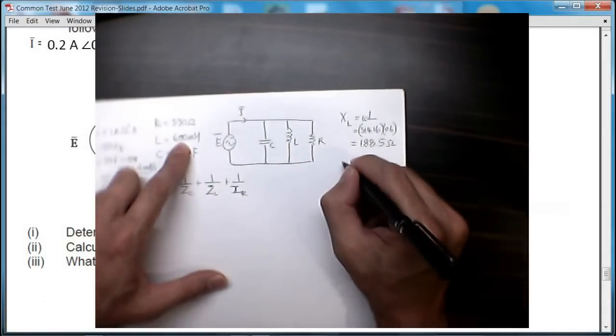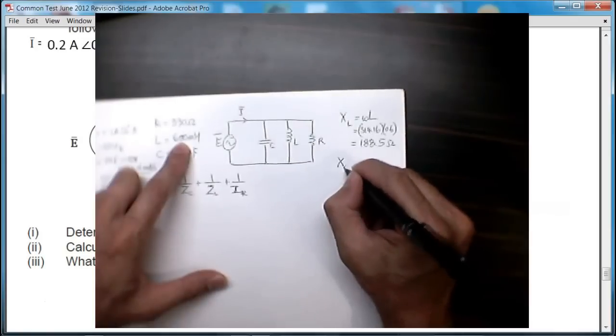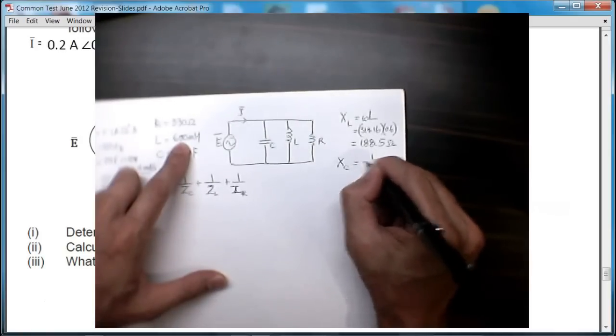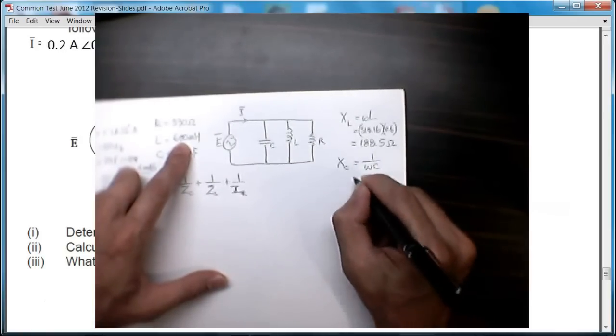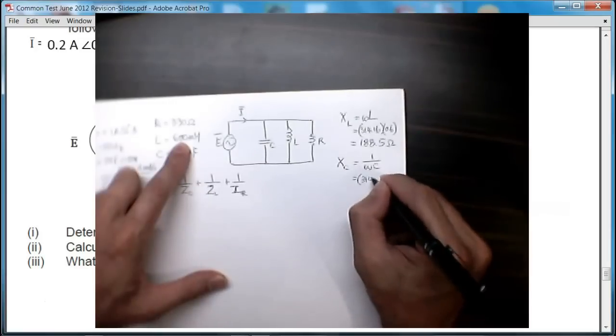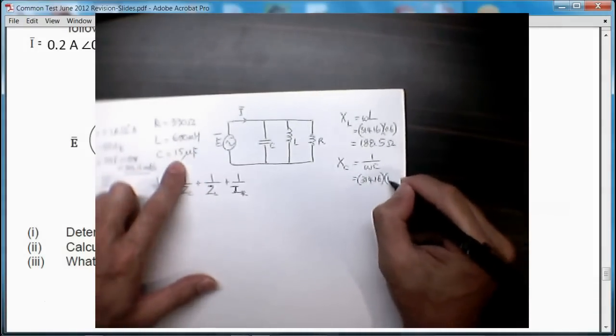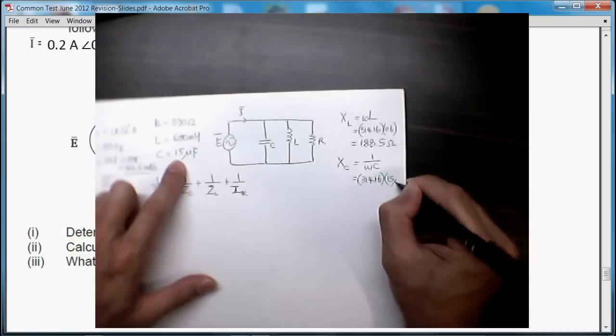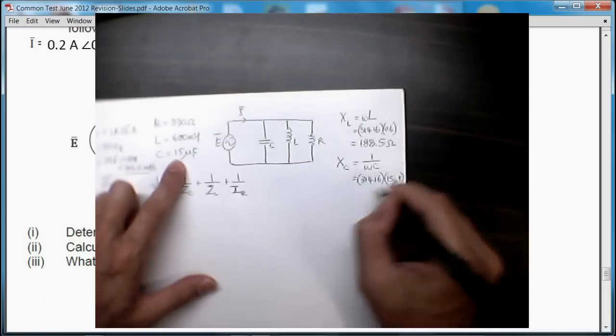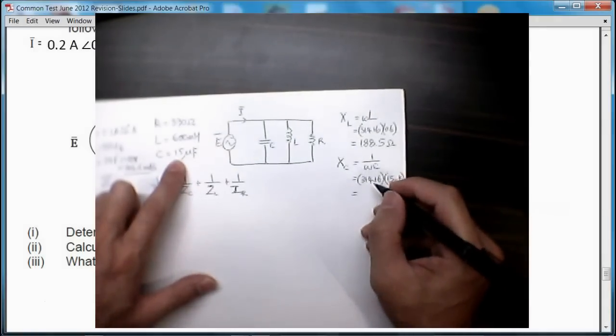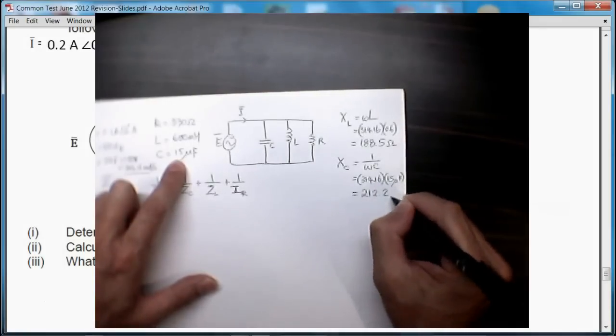Right, next I calculate the reactance due to the capacitor, which is XC = 1 upon ωC. That's 314.16 times 15 microfarads. That gives me 212.2 ohms.